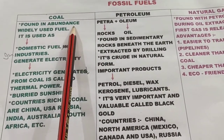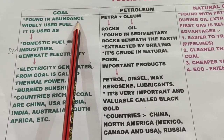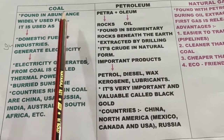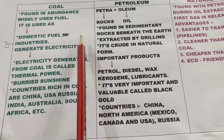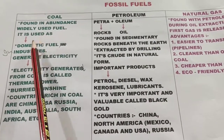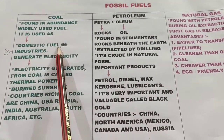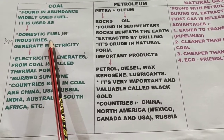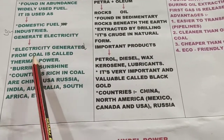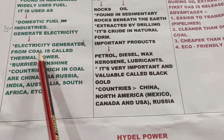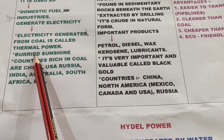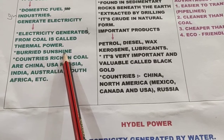Coal is found in abundance and is the most widely used fuel. You can write a short note on coal. Coal is used as a domestic fuel, in industries, and to generate electricity. Electricity generated from coal is called thermal power. Because it is the most common fuel, we call coal 'buried sunshine.'